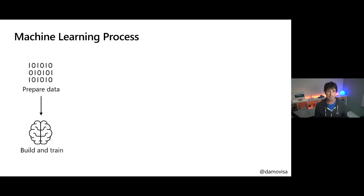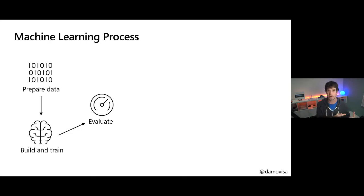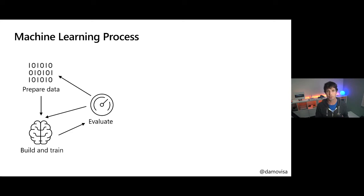The machine learning process is generally similar no matter what kind of model you're producing. There's this general idea of preparing the data you're going to train on, then using different types of training methods and algorithms to train a predictive model, then evaluating how accurate it is, and then going through a loop — going back to the drawing board and trying to improve by improving the quality of the data, which is the hardest part but not very exciting. Or improving the way we train our model: changing algorithms, changing hyperparameters, scaling up so we train for longer.